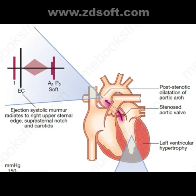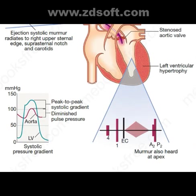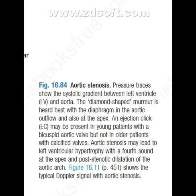There is an ejection systolic murmur that radiates to the right upper sternal edge, supra-sternal notch, and carotids. The A2 component of the second heart sound is soft. A murmur is also heard at the apex. Pressure traces show the systolic gradient between the left ventricle and aorta, and the diamond-shaped murmur is heard at the base with the diaphragm in the aortic outflow and also at the apex. An ejection click may be present in young patients with a bicuspid aortic valve, but not in older patients with calcified valves. Aortic stenosis may lead to left ventricular hypertrophy with a fourth heart sound at the apex and post-stenotic dilatation of the aortic arch.